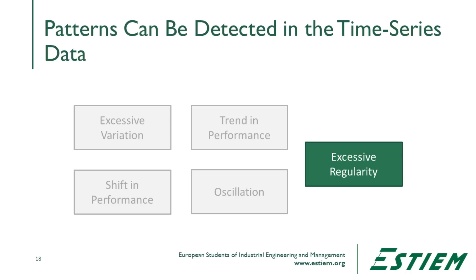The final pattern is excessive regularity — when the line is just flat and stable. What we don't see is any natural variation. This typically indicates that the measurement system is not capable of actually giving us good performance readings; it cannot detect the natural variation in the process, and therefore it won't be able to detect change very well at all.